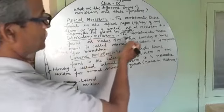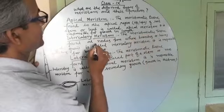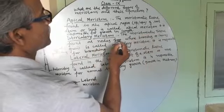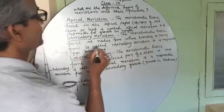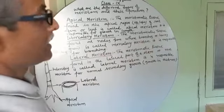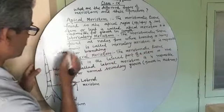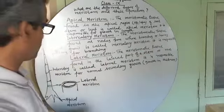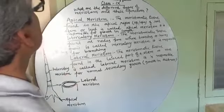The meristematic tissue found at nodes from where branches or leaves grow is called intercalary meristem. It is responsible for branching, where branches grow and leaves also grow.